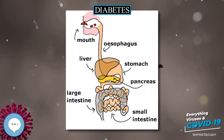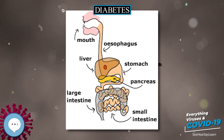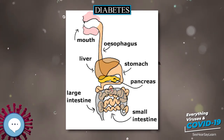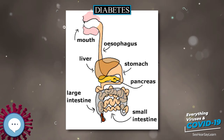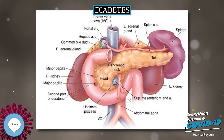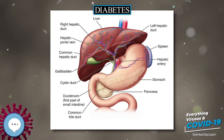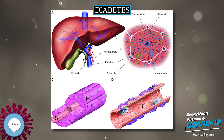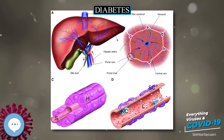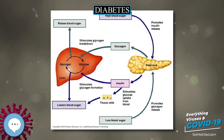In 2017, diabetes resulted in approximately 3.2 to 5.0 million deaths. The global economic cost of diabetes-related health expenditure in 2017 was estimated at US$727 billion. In the United States, diabetes cost nearly US$245 billion in 2012. Average medical expenditures among people with diabetes are about 2.3 times higher.